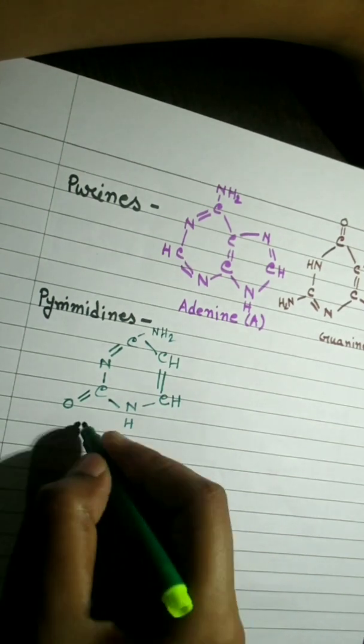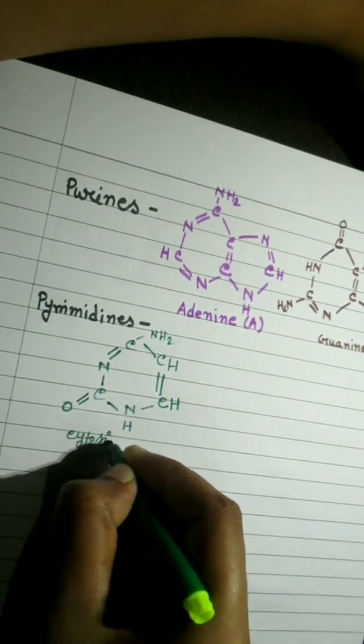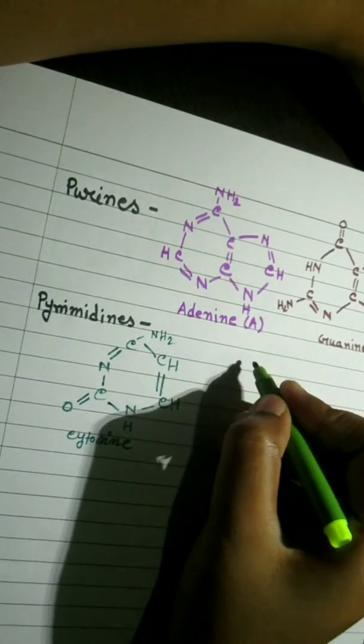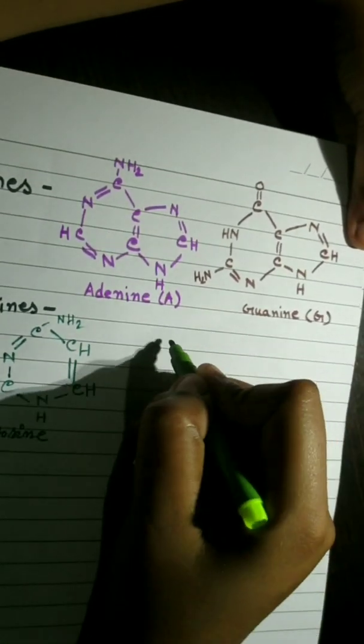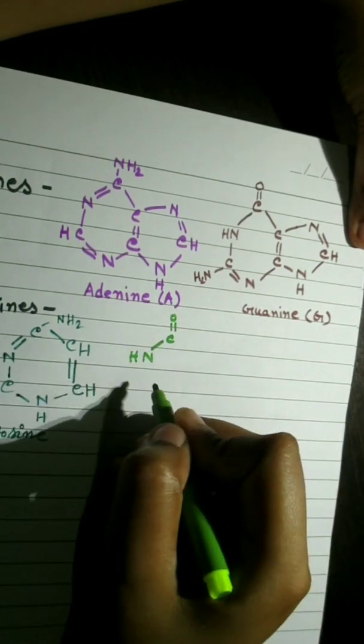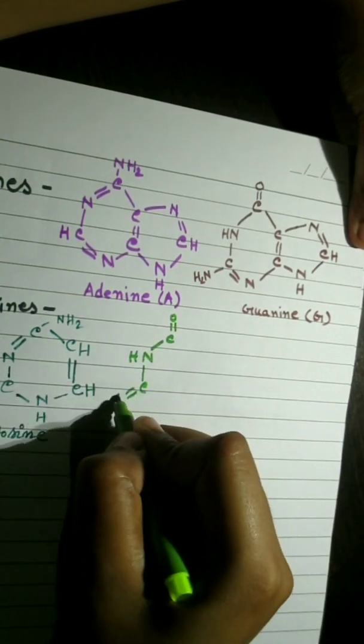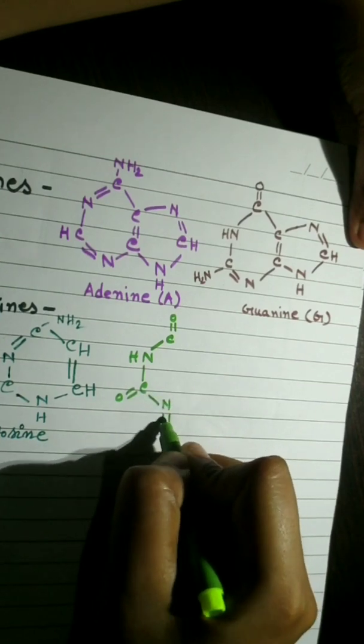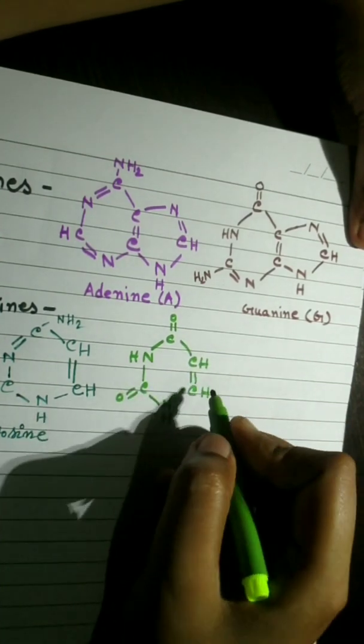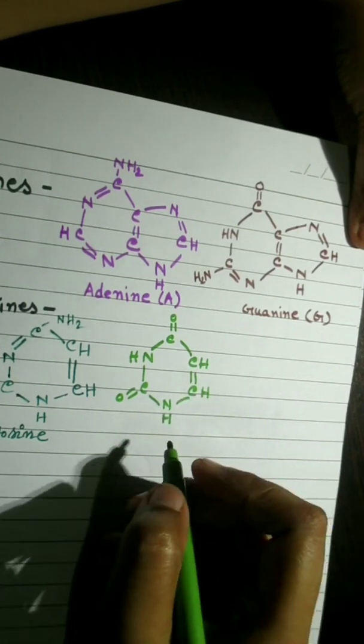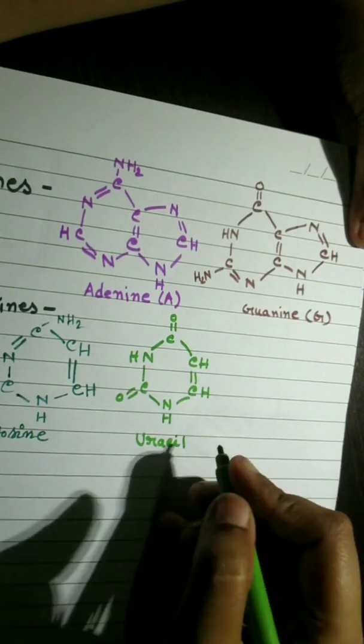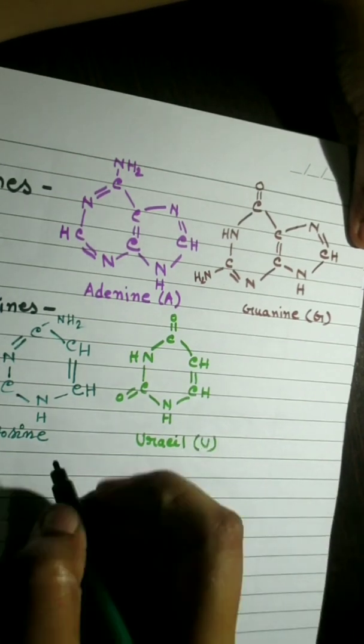Purines always bind with pyrimidines, known as complementary pairing. The ratio of the two will always be constant within a DNA molecule. In other words, one strand of DNA will always be an exact complement of the other as far as purines and pyrimidines go. This phenomenon is known as Chargaff's rules, named after Erwin Chargaff who first noticed it.